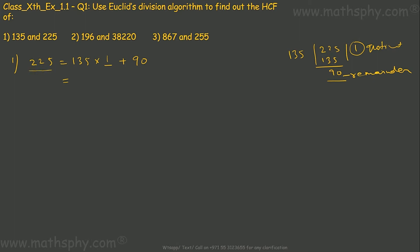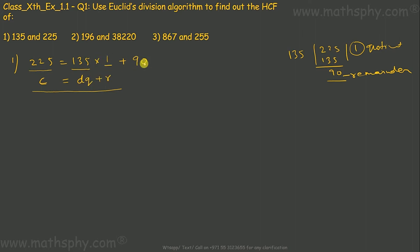If I take 225 as C and 135 as D, the quotient 1 as Q, and remainder 90 as R, then the equation is C equals DQ plus R — meaning 225 equals 135 into 1 plus 90. We have to find the HCF and this process will keep continuing until the remainder gets to 0. As of now, we have remainder 90, so let's move ahead.